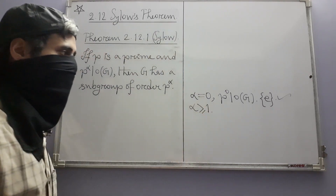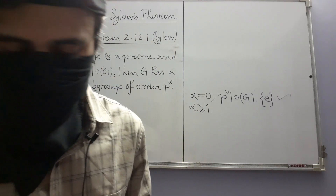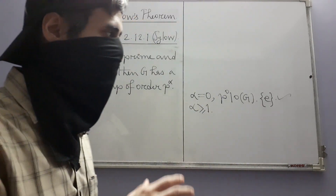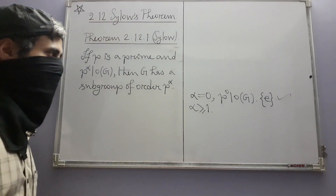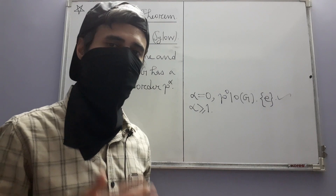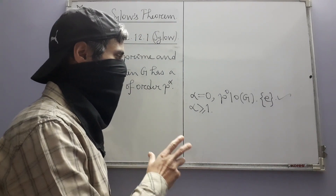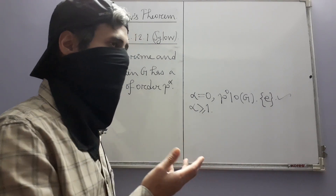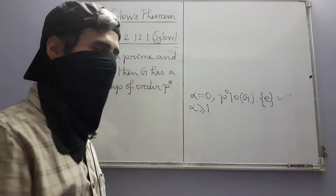In this text there are three proofs of Sylow's theorem, and this is the first one we are going to do today. It is due to someone named Wieland, and it is combinatorial and number-theoretic in nature. Wieland's proof also has the advantage that we will actually see a subgroup whose order is p^α.